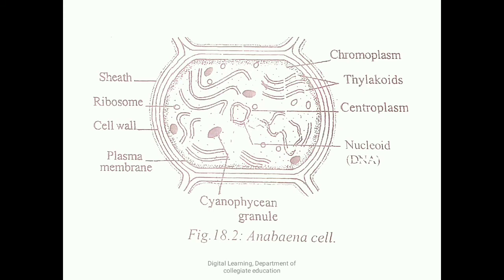A typical Anabaena cyanophycean cell has the following characters: a three-layered cell wall bounded by mucilage on the outside, followed by a cell membrane enclosing protoplasm. The protoplasm is differentiated into a colored peripheral chromoplasm and a central centroplasm. The central centroplasm is hyaline and occupied only by DNA — the genetic material — without a nuclear membrane or nucleolus. In the chromoplasm, in addition to pigments, there are thylakoids, 70S ribosomes, gas vacuoles, and reserve food material such as starch and lipid oil globules.